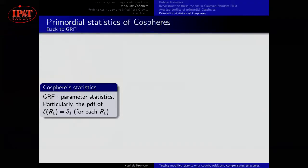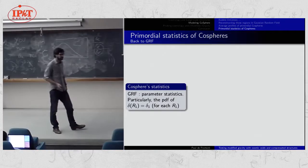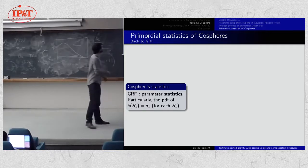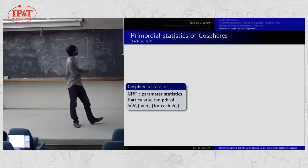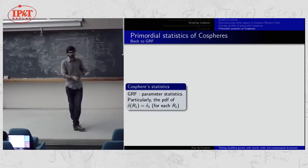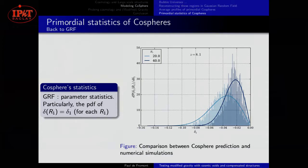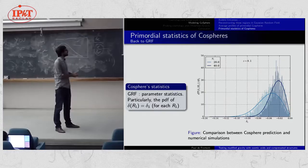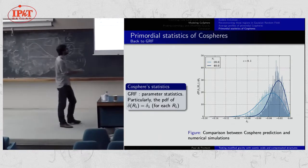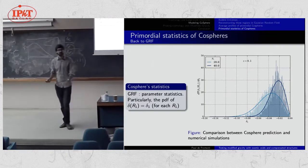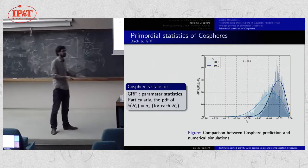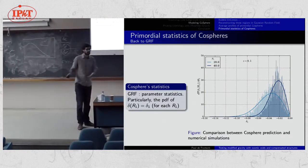In the Gaussian random field, you can compute the profile and also derive the statistics of these regions. For example, you can compute the PDF of the compensation density — the density contrast on the sphere of radius R₁. Comparing with simulation at high redshift, the histogram comes from the simulation and the curves are derived using this formalism. You are indeed able to reproduce what you measure in simulations in ΛCDM cosmology, and if you can reconstruct it in ΛCDM, you can expect to reconstruct it in other cosmologies too.